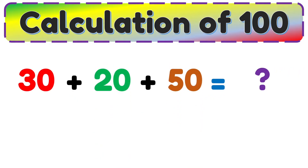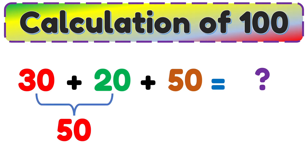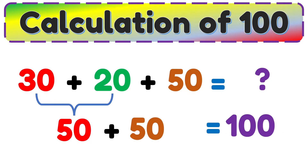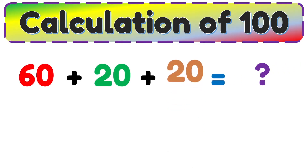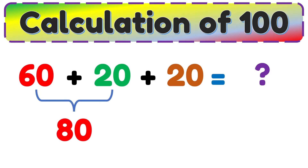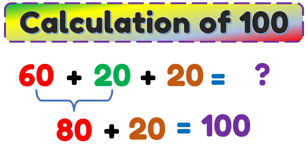30 plus 20 plus 50. 30 plus 20 is equal to 50, 50 plus 50 is equal to 100. 60 plus 20 plus 20. 60 plus 20 is equal to 80, 80 plus 20 is equal to 100.